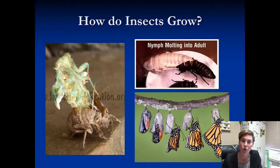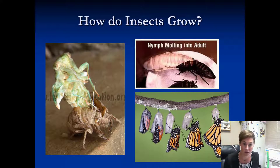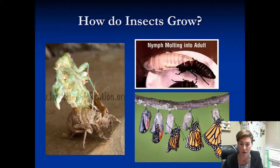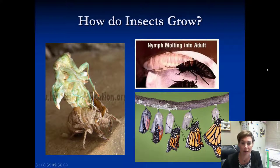In order to get any bigger, insects have to shed that skin, come out nice and soft, and then they'll harden back up again and their exoskeleton will get tough. You can see these different images of different types of insects molting.